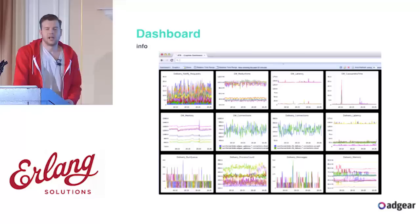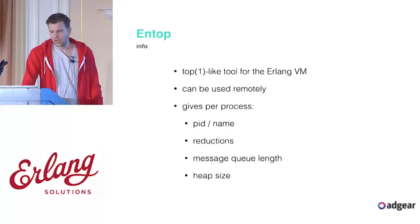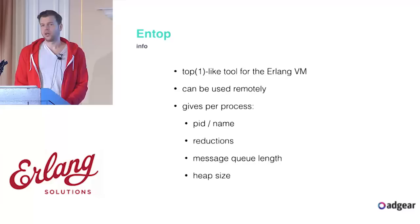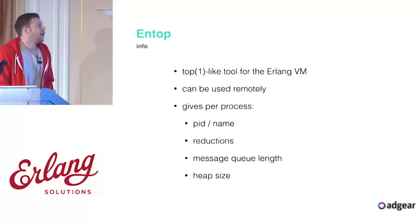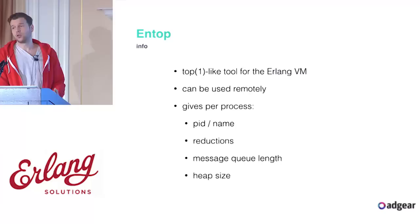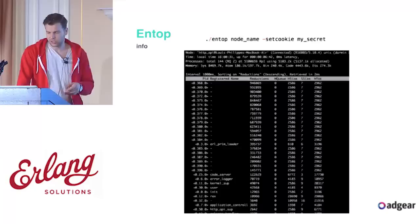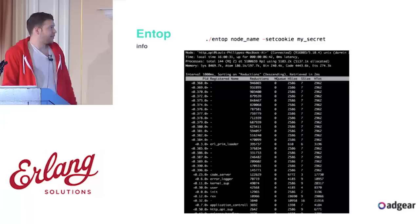For all these monitoring tools, since we send everything to StatsD, we have a Graphite dashboard so we can see at a glance if anything is going wrong. Another tool we use mostly for introspection is ntop. When we receive an alert, the first reflex is to check the dashboard, and if we see message queues blowing up, we go use ntop. ntop is a top-like tool for the Erlang VM. One nice thing is it can be used remotely — you can connect from your laptop at home to the data center and see message counts, queue lengths, heap sizes, and reductions.